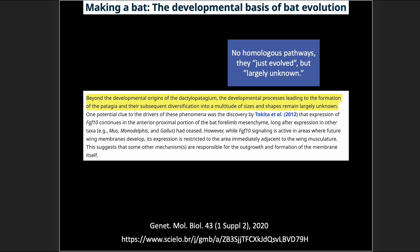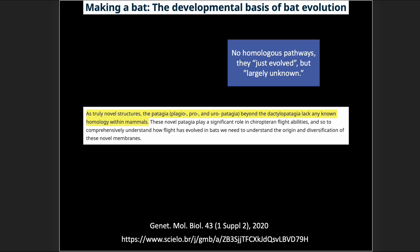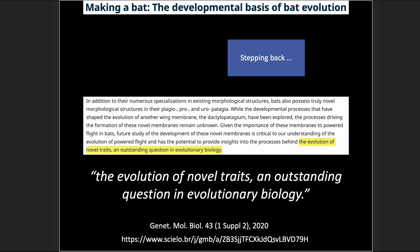'Beyond the developmental origins of the dactylopatagium, the developmental processes leading to the formation of the patagia and their subsequent diversification into a multitude of sizes and shapes remains largely unknown.' There are no homologous pathways — they just evolved somehow, and we really don't understand how. 'As truly novel structures, the patagia beyond the dactylopatagium lack any known homology within mammals.' All these novel, unique structures arose at the same time to support bat flight. The paper admits the evolution of novel traits is an outstanding question — meaning an unknown — in evolutionary biology.